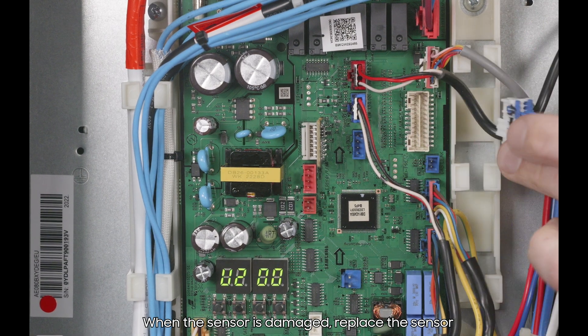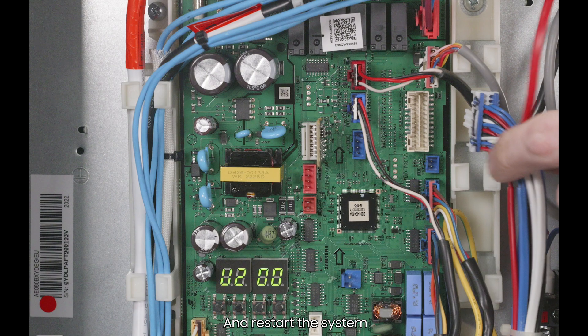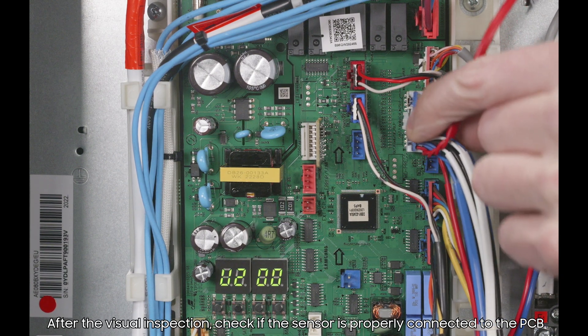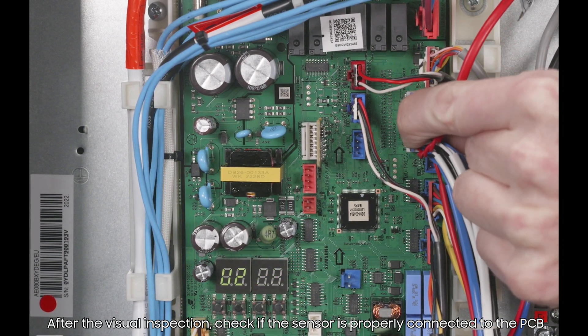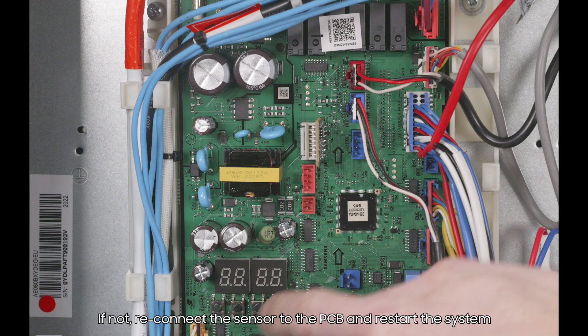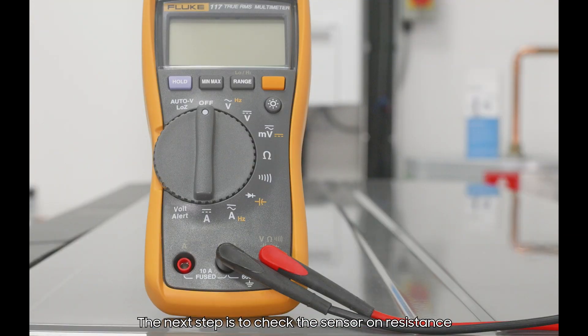When the sensor is damaged, replace the sensor and restart the system. After the visual inspection, check if the sensor is connected properly to the PCB. If not, reconnect the sensor to the PCB and restart the system.